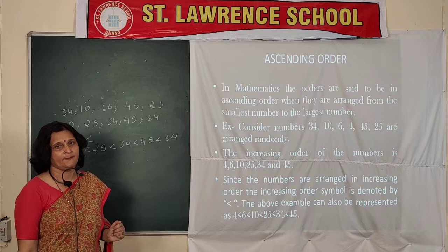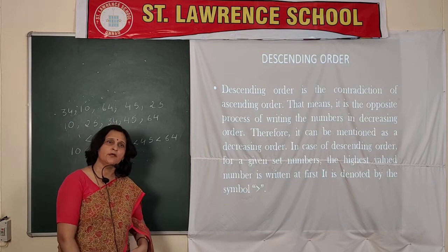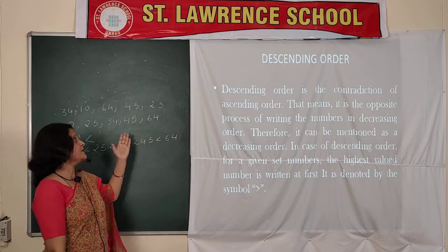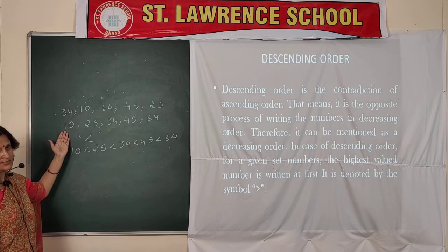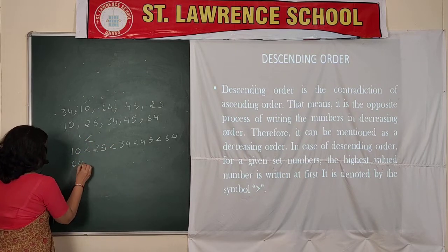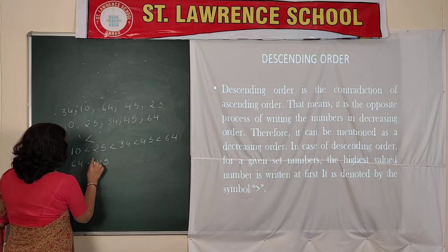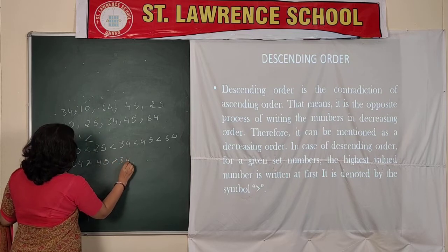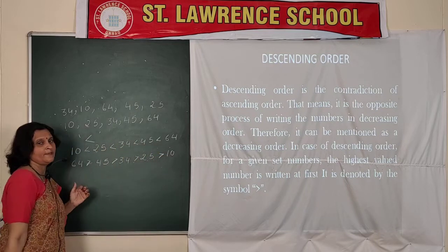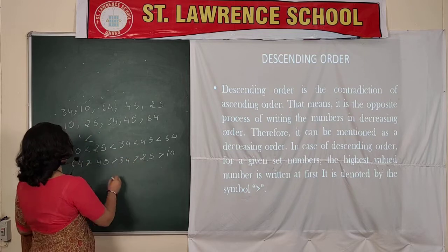Now descending order. Descending means decreasing — you have to write the numbers from the largest to the smallest. It is just the opposite of ascending. In ascending you wrote the smallest number first; in descending you write the largest number first: 64, 45, 34, 25, and at the last 10.